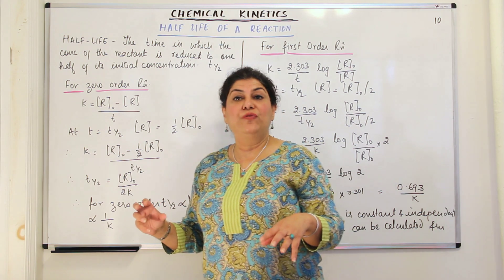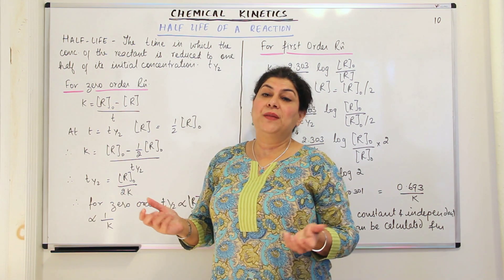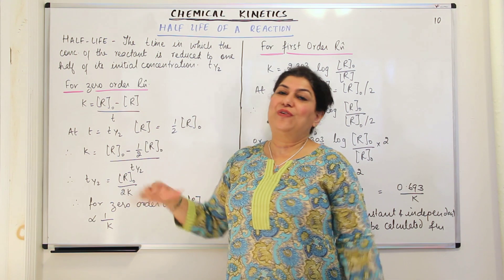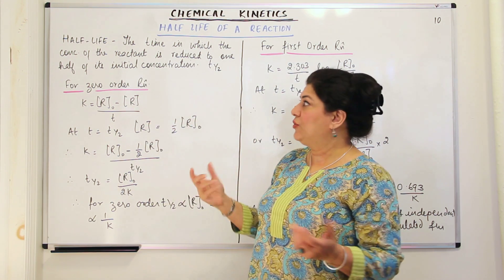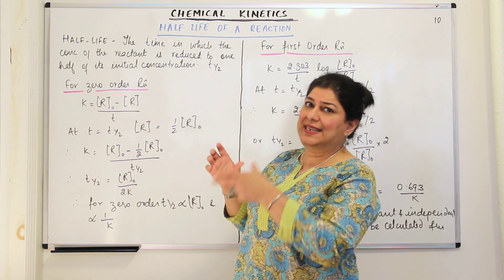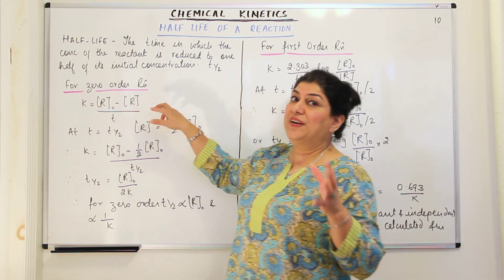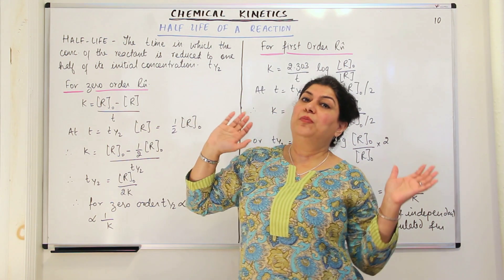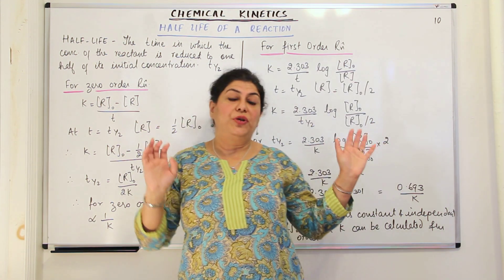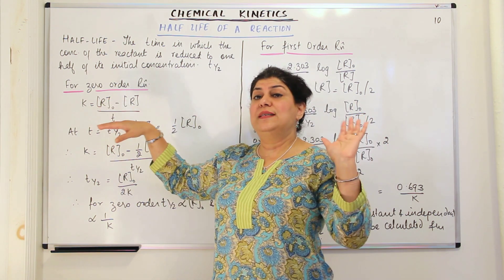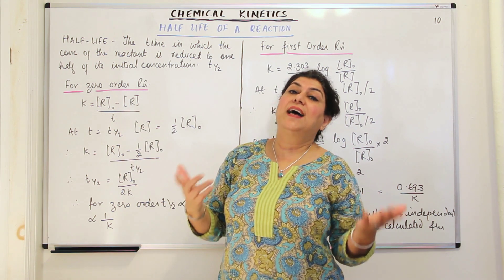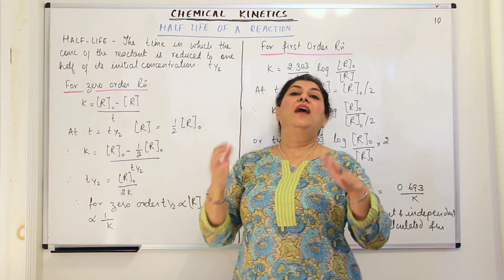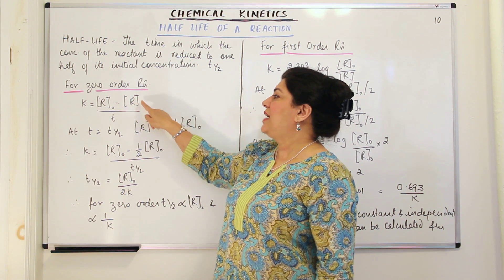As you know, the rate equation for different orders of reactions are different. Therefore, when you calculate the rate constant or T½, that would also be different for different orders of reactions. T½ is nothing but a time period T in the rate equation. So for both zero order and first order, T is T½, which means the concentration R is half of R0, the initial concentration.